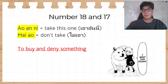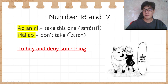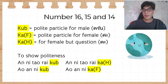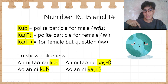Number 18 and 17: อันนี้ and ไม่อันนี้. อันนี้ means 'I'll take this one' and ไม่อันนี้ means 'I don't take it.' If you want to buy something, use อันนี้, and if you don't want to buy something, just say ไม่อันนี้. Note: ไม่อันนี้ uses a falling tone on ค่ะ, and อันนี้ uses a high tone on คะ.